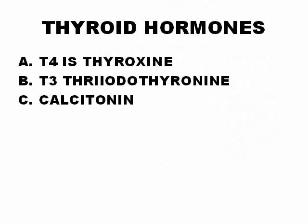The thyroid gland produces three hormones: T4, which is called thyroxine; T3, which is called triiodothyronine; and calcitonin, which is related to calcium metabolism.